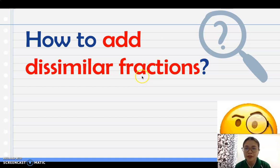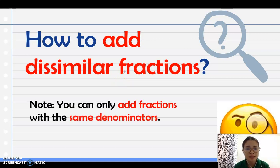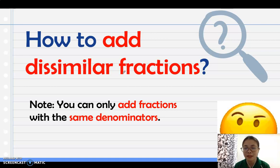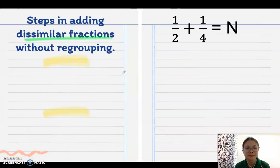This time we are going to add dissimilar fractions — fractions where the denominators are not the same. You can only add fractions directly if they have the same denominators. If they are not the same, then you cannot add directly.